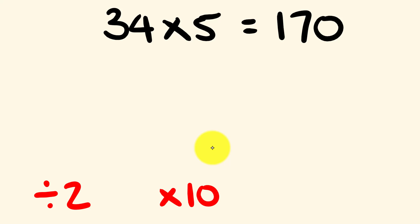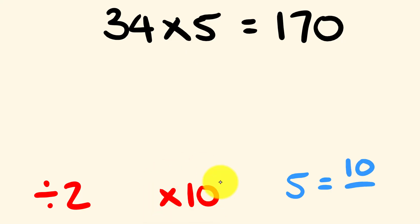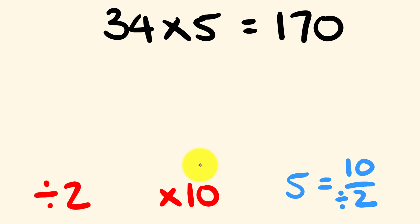So why does this work? We're multiplying by 5, and 5 is equal to 10 over 2. So what we're doing is first dividing by 2 — that's the division part — and then multiplying by 10. As long as we do those two steps, it's the same as multiplying by 5.